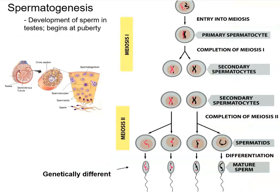Meiosis in males is called spermatogenesis — that's how sperm cells are produced. This all happens inside the testes. The sperm matures and gets rid of most of its cytoplasm so that it can efficiently deliver its genetic content to the egg.